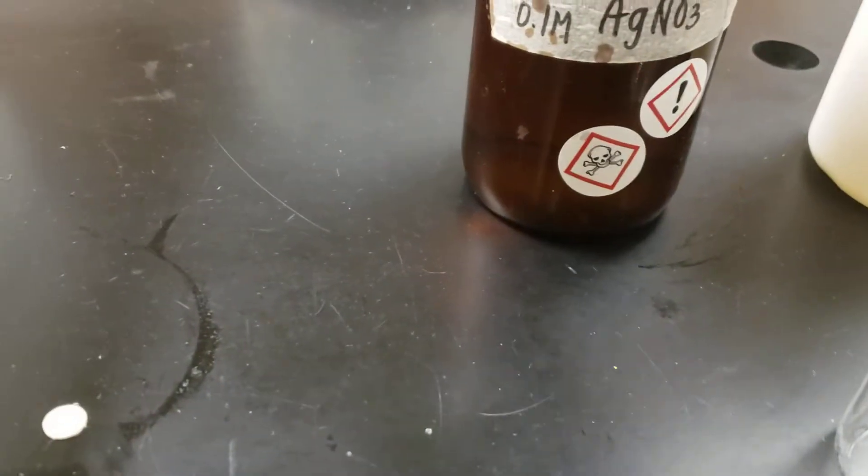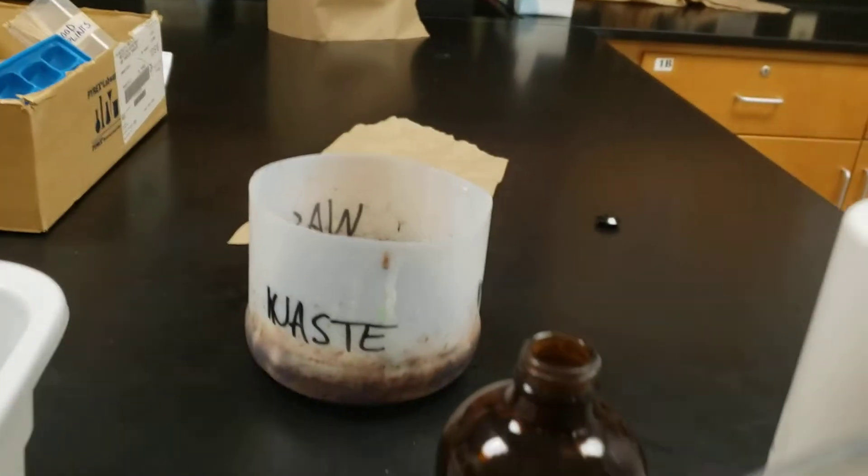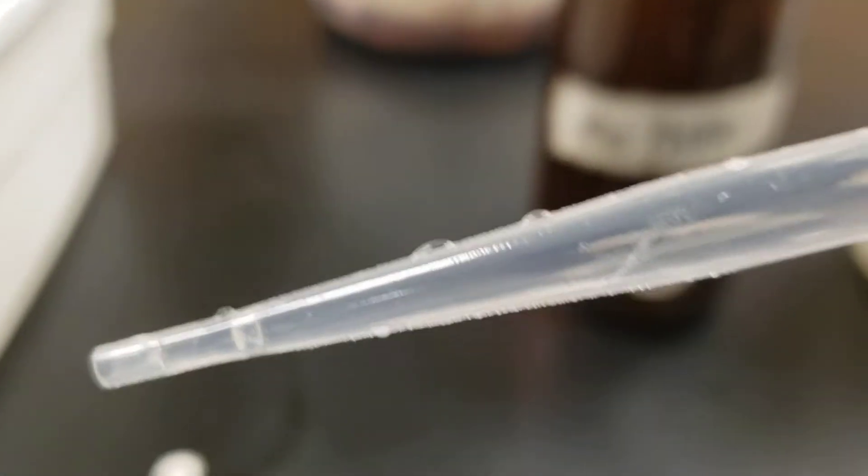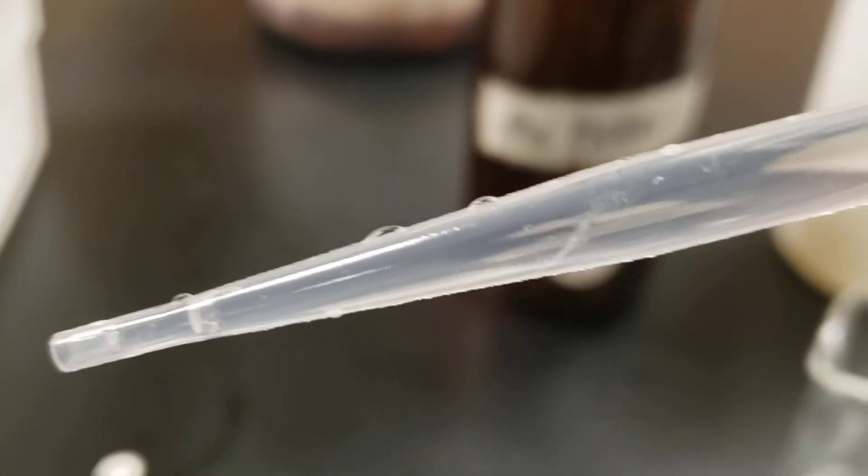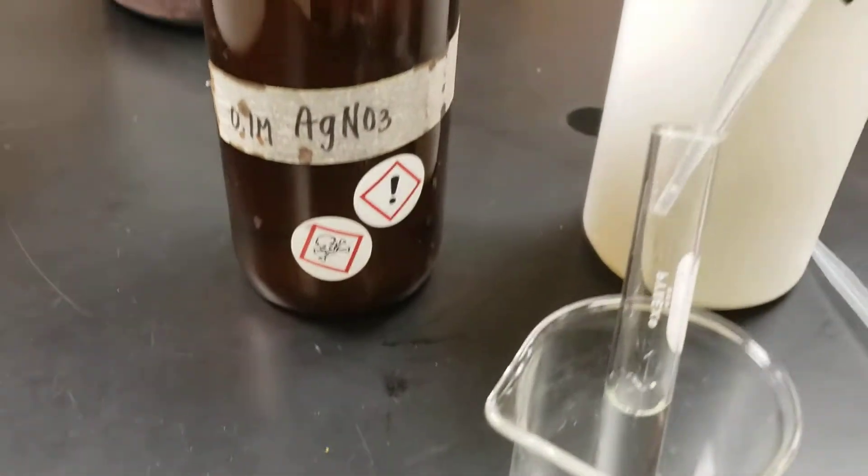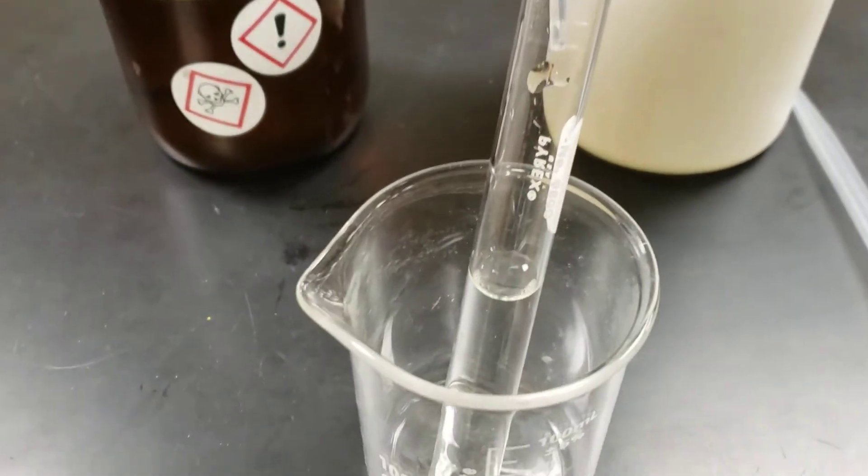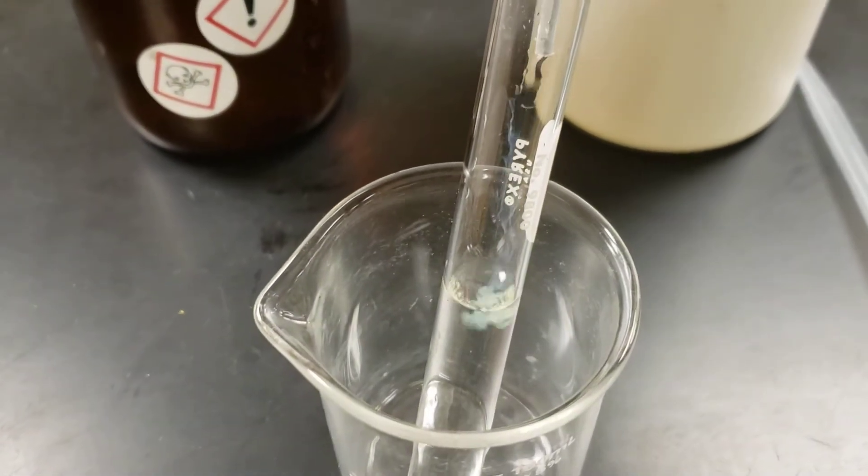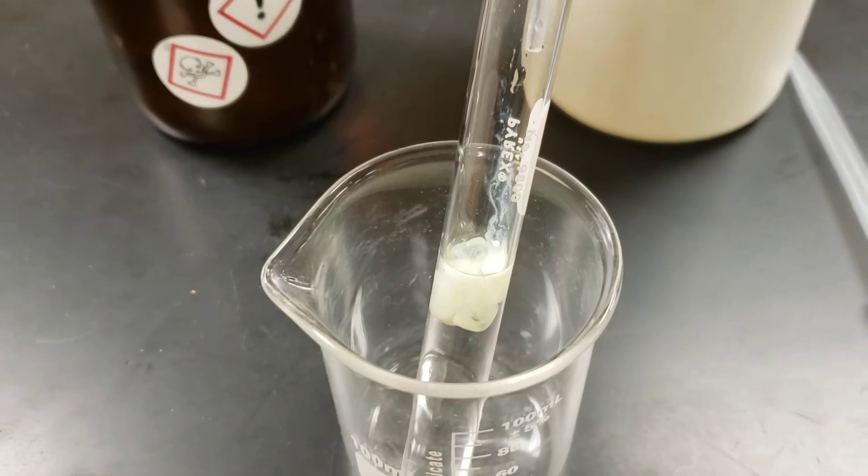And then get the silver nitrate. Notice the silver nitrate in this pipette is also a clear aqueous solution, just like our sodium iodide. So I'm going to add this to this and notice what happens. We get cloudiness.